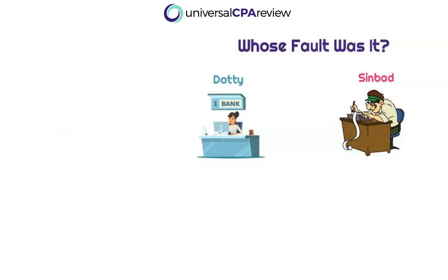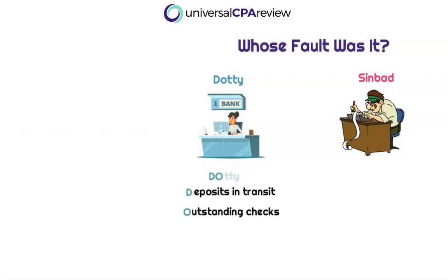Chances are higher that this is going to be Sinbad's fault, because a lot of bookkeeping is still done somewhat manually. Although there are plenty of bookkeeping softwares out there — QuickBooks is a good one — the reality is a lot of errors are still going to occur, and transactions are not going to be reported quite as automatically as transactions reported by large banks in a bank statement. So we're going to focus on Dottie over at the bank, specifically the first two letters of her name: the D and the O.